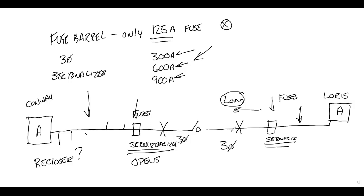Some sectionalizers can also be hooked up to SCADA for remote operation, so you get an indication of where the fault is. Instead of sending a guy out in a pickup truck to drive five miles, the sectionalizer tells you the fault is beyond it, narrowing your patrol area to two and a half miles. When the sectionalizer opens, the breaker and all customers prior to the sectionalizer remain on.